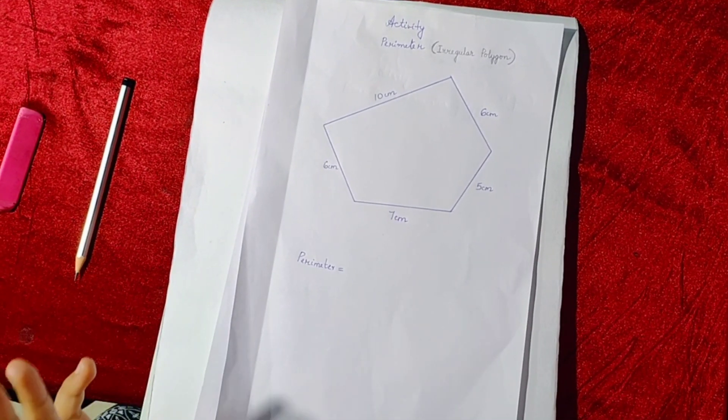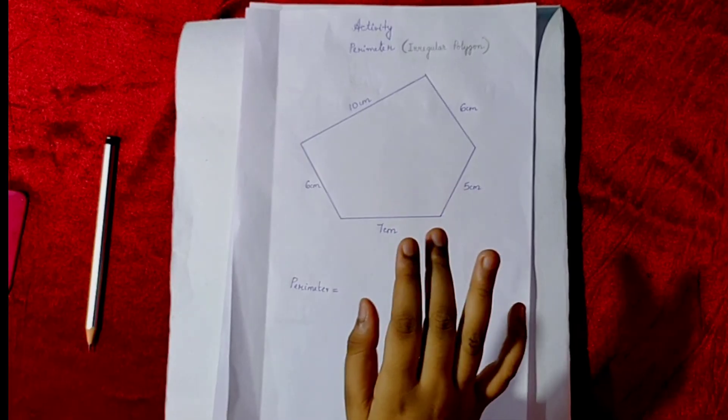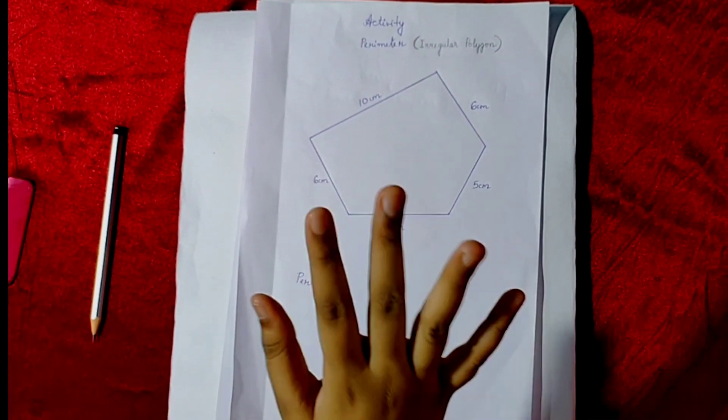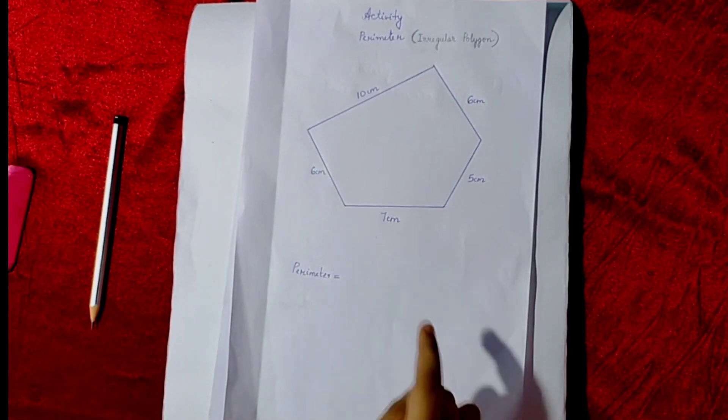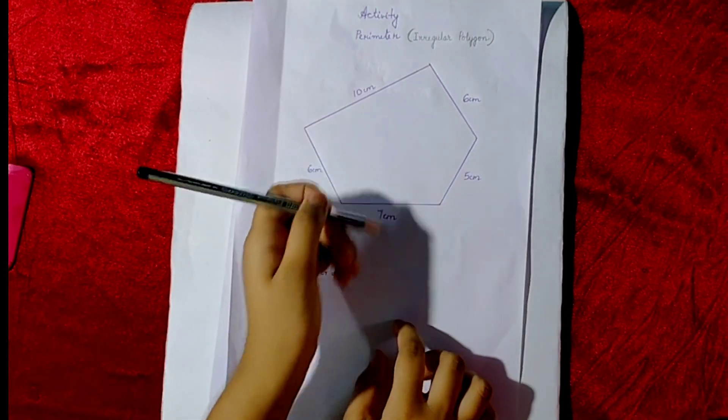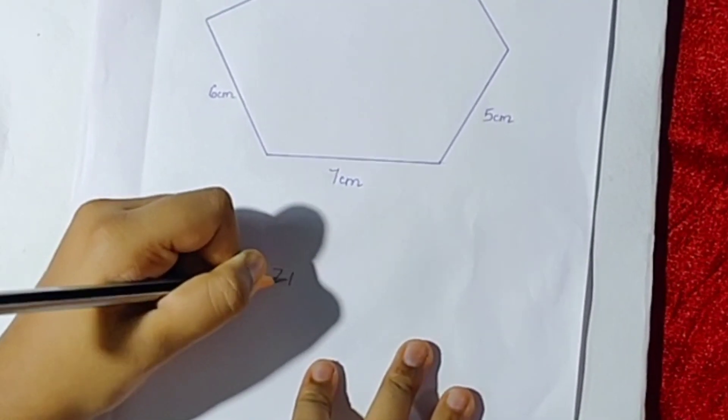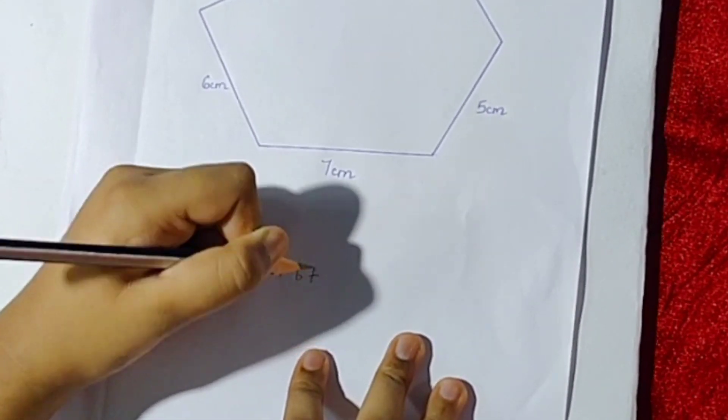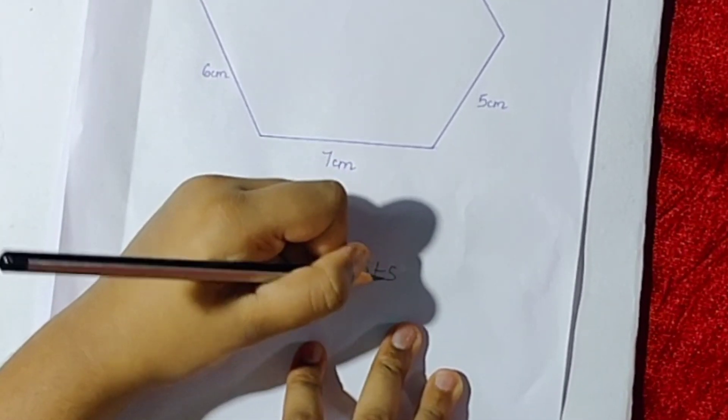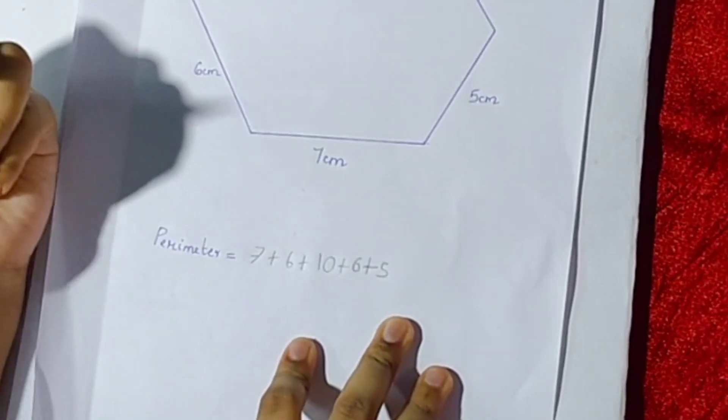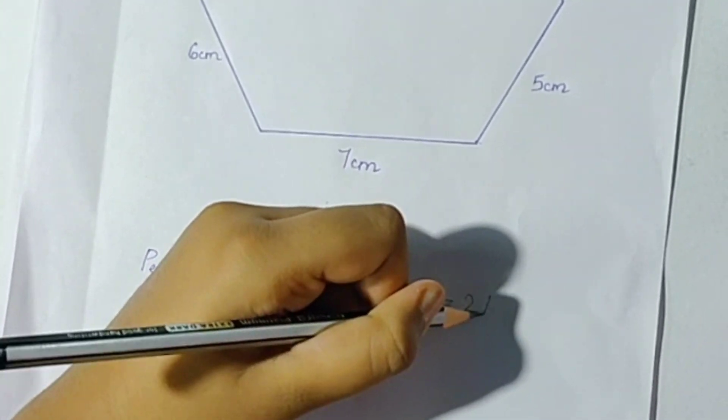Next we can find the perimeter of an irregular polygon. The perimeter of this is we have to add all the sides: 7 plus 6 plus 10 plus 6 plus 5. The perimeter is equal to 24 centimeters.